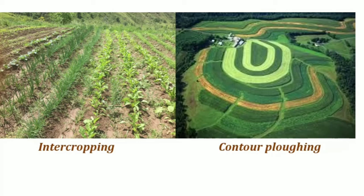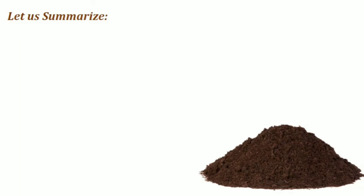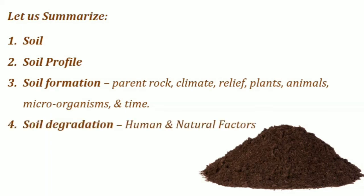Lastly, shelter belts — in coastal and dry regions, rows of trees are planted to check wind movement and protect soil cover. With these methods, we come to an end of the lesson. To summarize: in today's video we have learned what soil is, the soil profile, the factors affecting soil formation, causes of soil degradation, and conservation measures. Thank you students, happy learning!